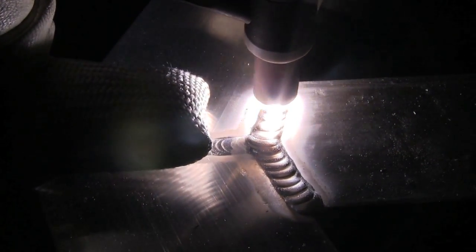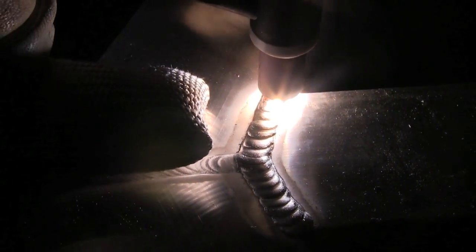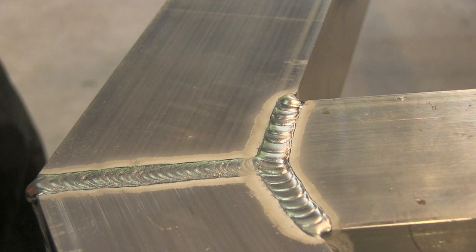You can see sometimes when the heat gets built up and the cooling rate slows, there's a little graininess to the appearance. And that's very typical of 4043. The 4943 will do it as well if you get things too hot and the cooling rate slows down.